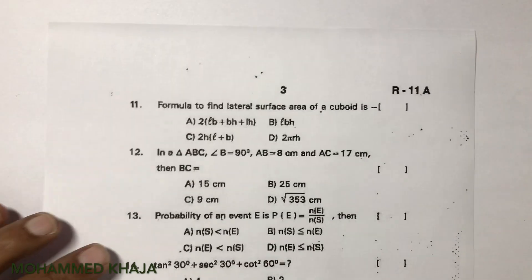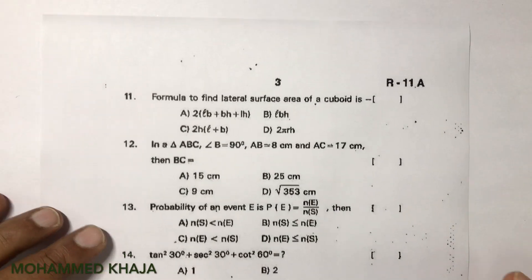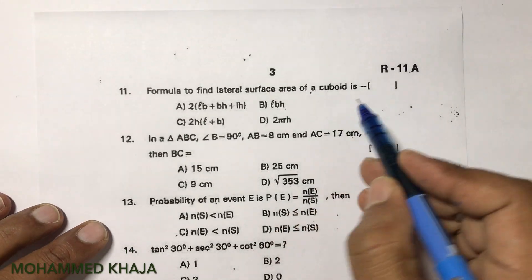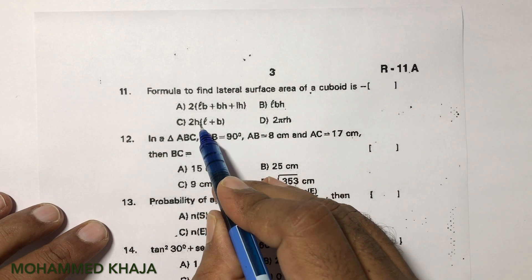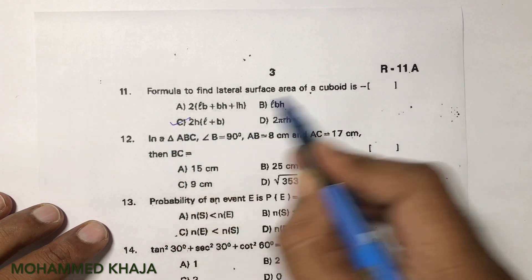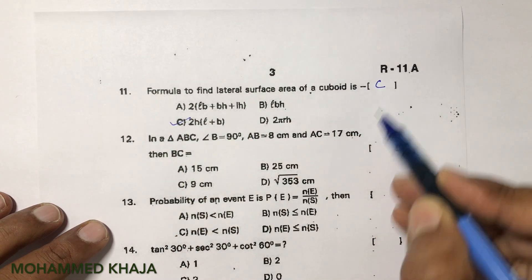Formula to find the lateral surface area of a cuboid is 2h(L + B). The correct option is C.